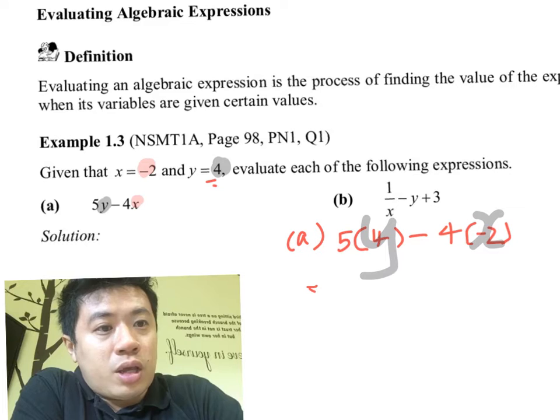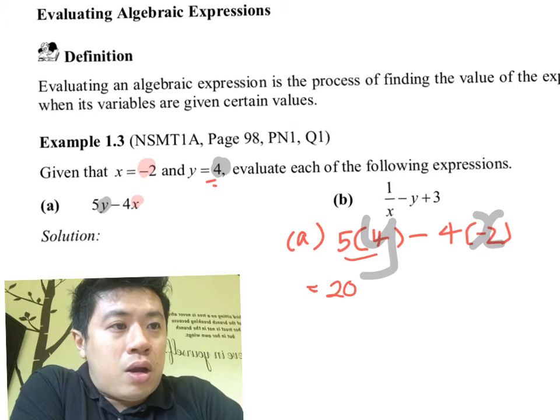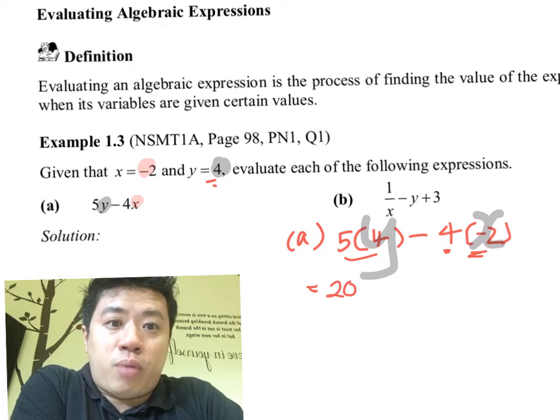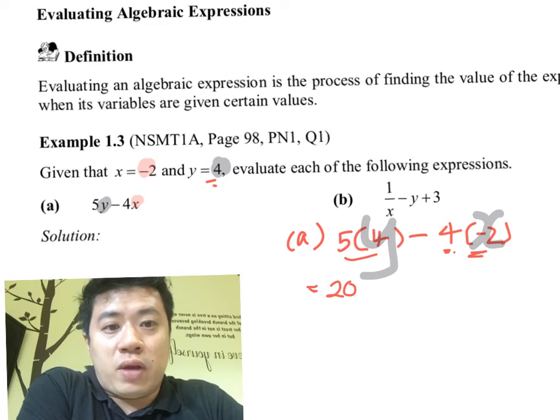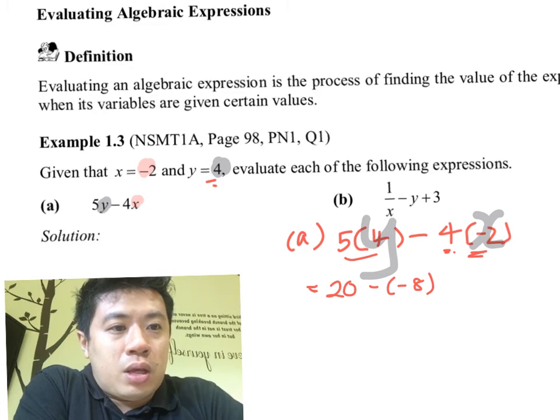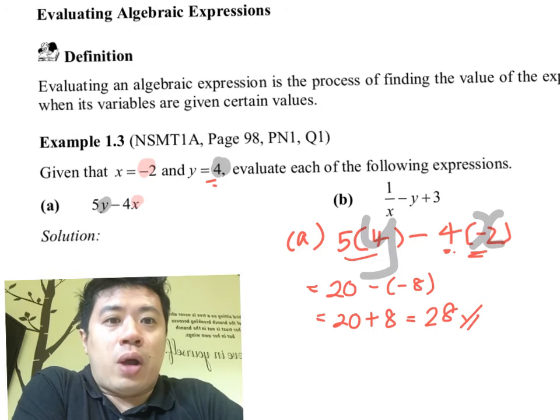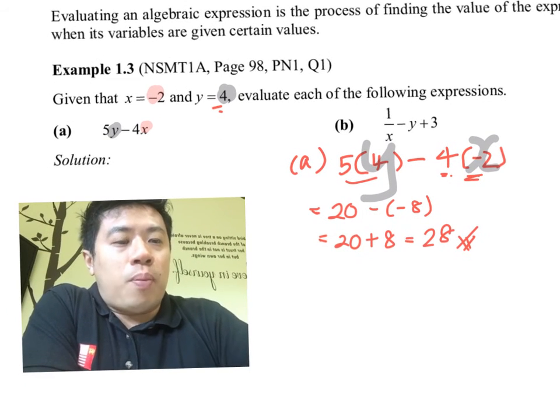Now, 5 times 4 gives us 20. Remember multiplication comes first, so 4 times negative 2 gives us negative 8. This is 20 minus negative 8, which is the same as 20 plus 8, which equals 28. That's our answer for part (a).